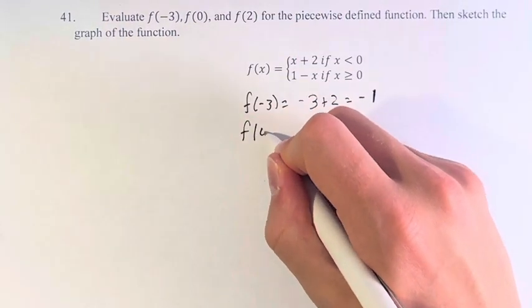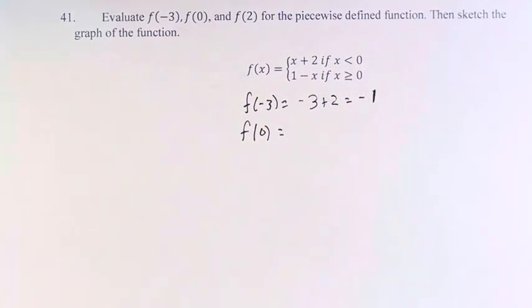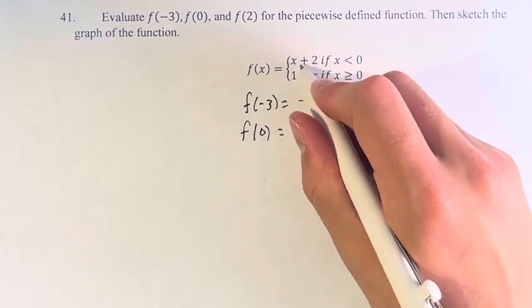f of 0, 0 is greater than or equal to 0, so therefore we're using 1 minus x, so 1 minus 0 is 1.